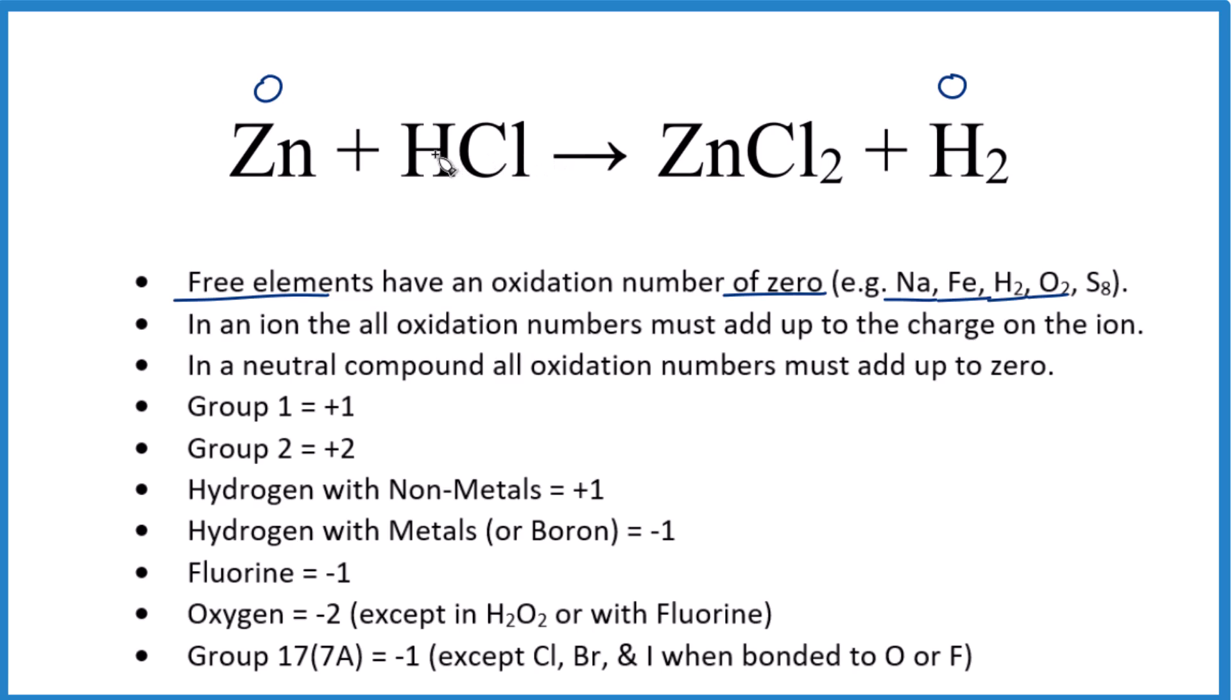Then when we look at something like hydrogen here, hydrogen when it's bonded to a nonmetal, chlorine's a nonmetal, that's going to be plus one. And then chlorine, chlorine's in group 17, and it's going to be negative one, except when it's bonded to these elements here. So most of the time it'll be negative one, each one of these, negative one.